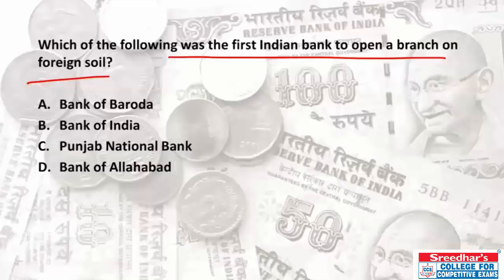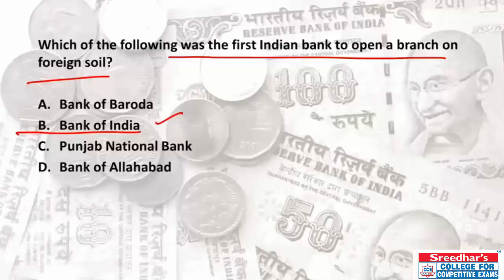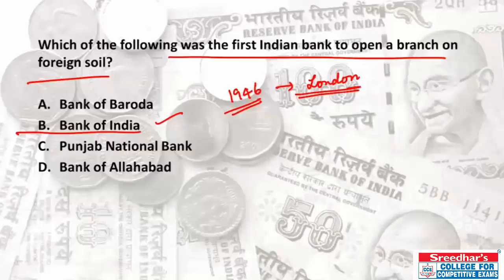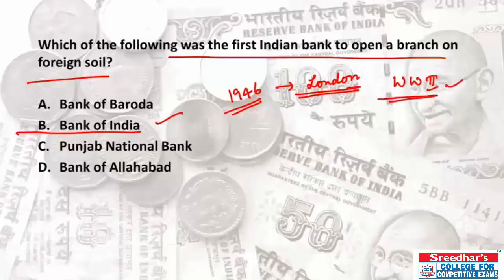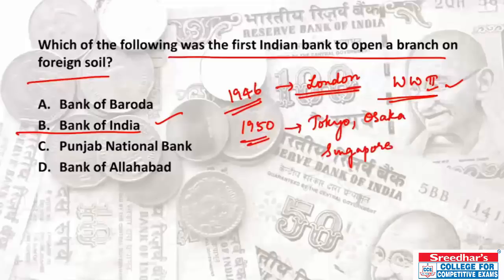The first Indian bank to open a branch on foreign soil is Bank of India. Bank of India's international expansion began in 1946 when it opened its first branch in London — the first Indian bank to do so and the first post-World War 2 overseas branch opened by any Indian bank. By 1950, Bank of India had opened numerous branches abroad including in Tokyo, Osaka, Singapore, Uganda, and Kenya.